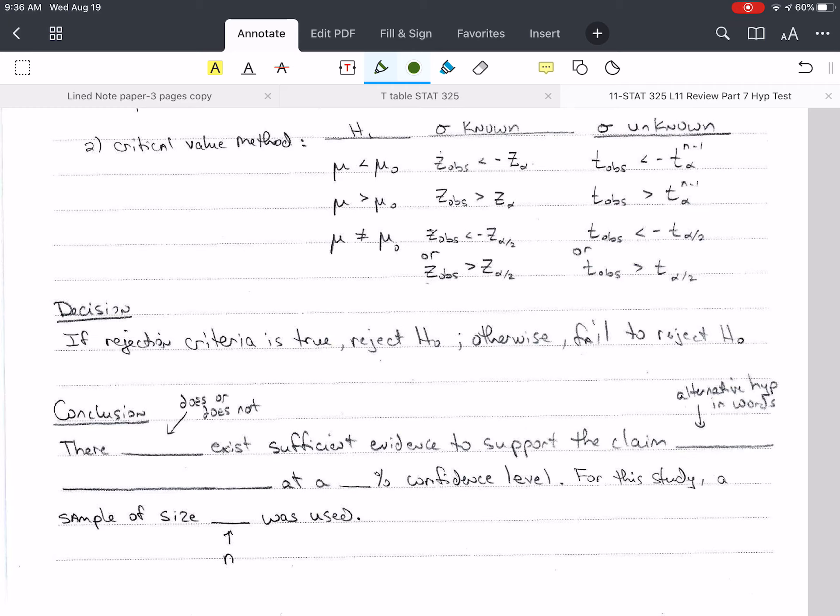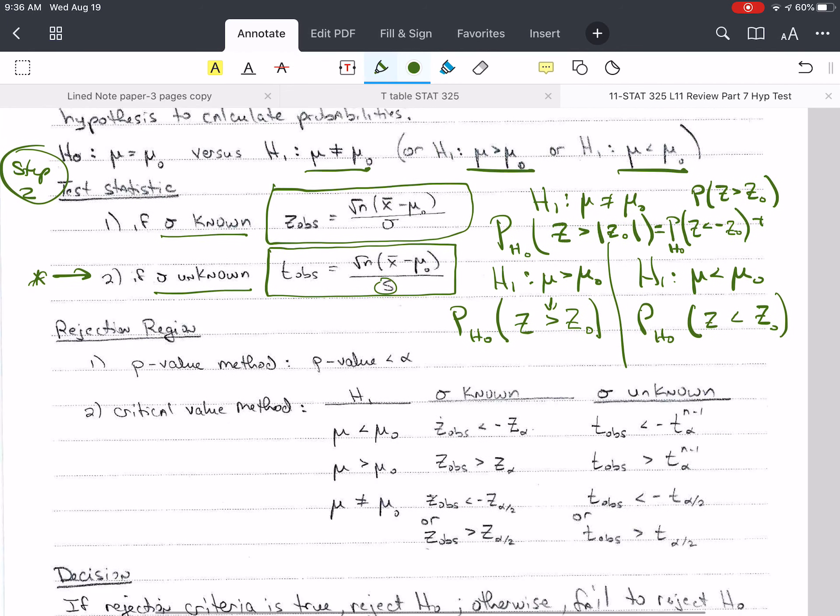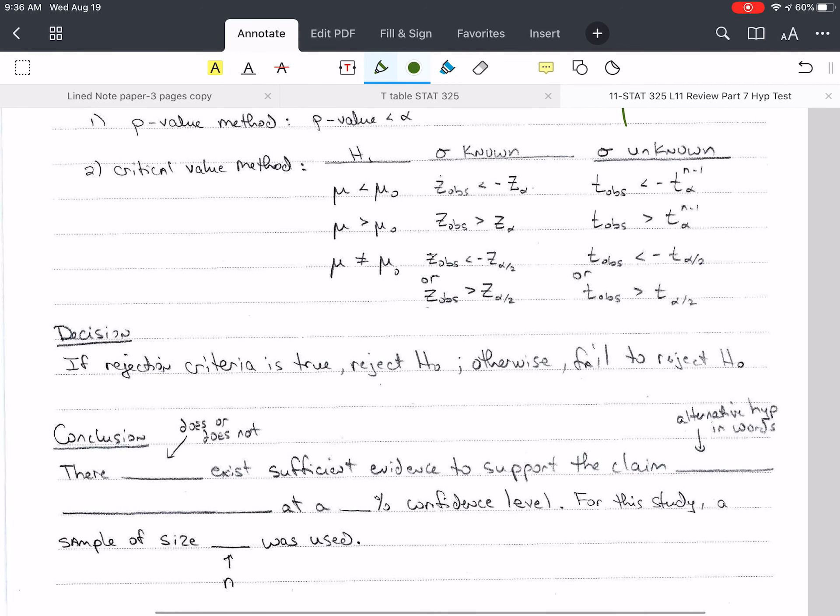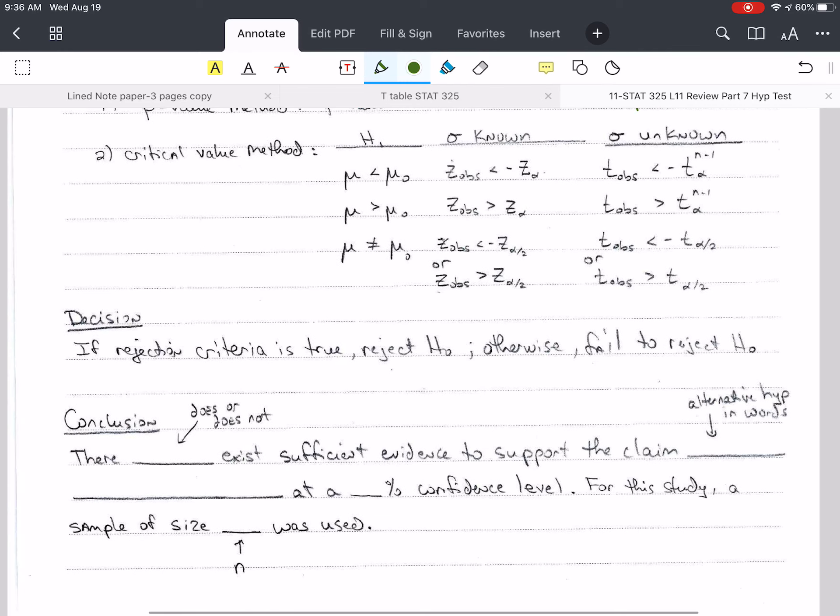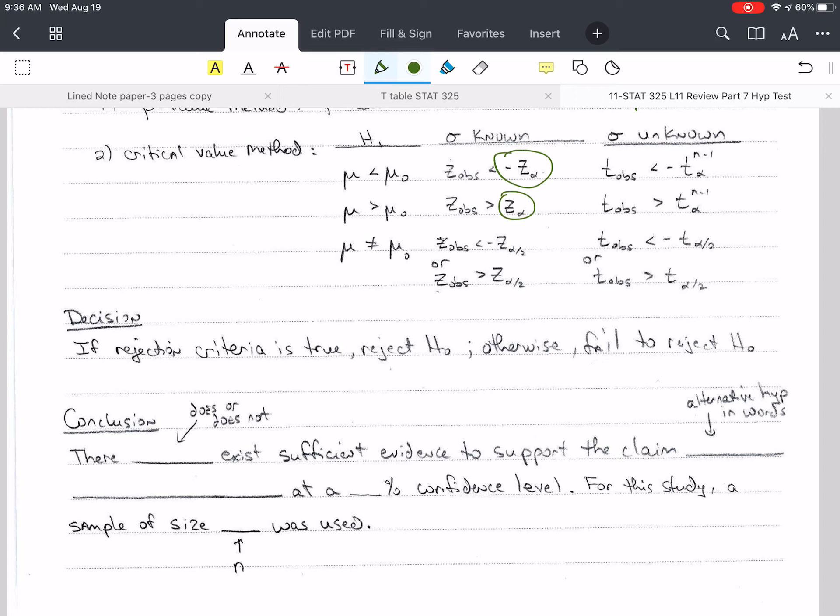So the critical value method is where we calculate the test statistic, and then we use a critical value, which is right here, or here, or here, and here. And of course, I'm using Z, but T, it goes for T as well. This is where we know sigma, and so we use a Z, then use this column. If we don't know sigma, we use S, so then we use this column. And notice how H-1 controls which row you use.